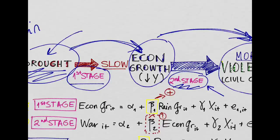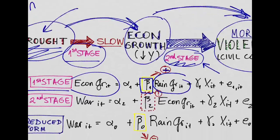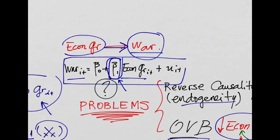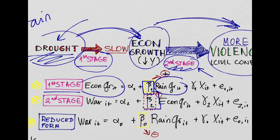We can just simply run the first stage like this, running economic growth on rainfall growth, and that will give us an estimate for this impact, this coefficient, which is most likely going to be positive. And then since we can't just run the second stage, remember what we said before, we had endogeneity problems and omitted variable bias when running the regression of war on economic growth. So we're going to have to derive this impact, this coefficient, from other means.